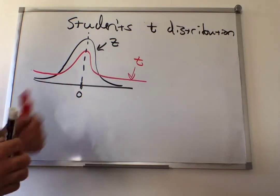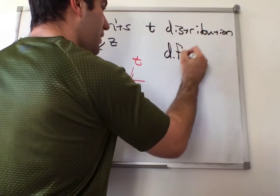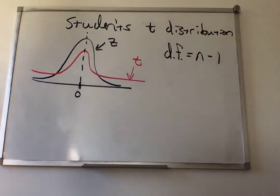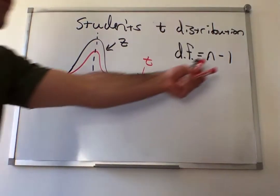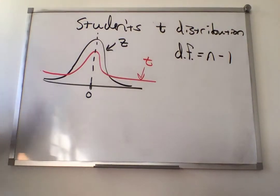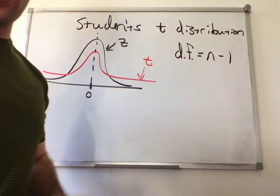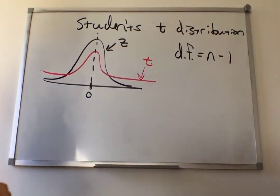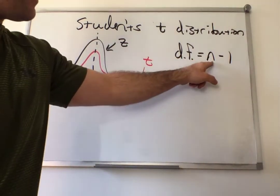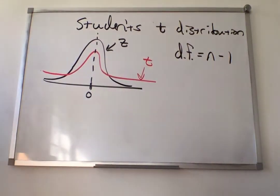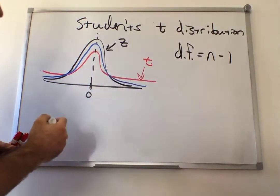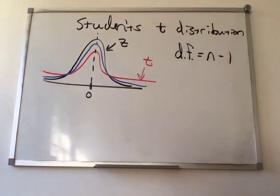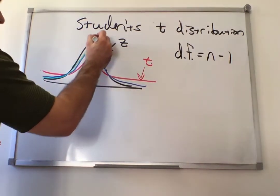The exact shape of this distribution depends on something called the degrees of freedom, which is always n minus 1 in this case. There are other formulas that use degrees of freedom with their own specific formula, but when we're calculating things using the t-distribution, the degrees of freedom is n minus 1. The larger the degrees of freedom — and the only way to make this large is to increase sample size — the more closely the t-distribution approaches the normal distribution.